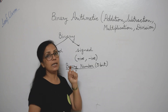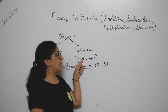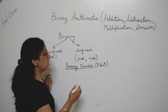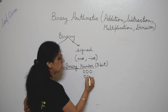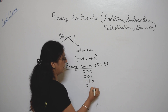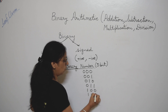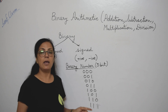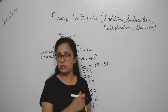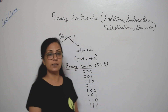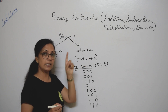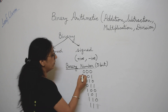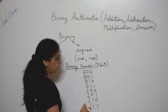Now we move on to signed representation of binary numbers. Signed binary numbers have both positive and negative values. If we take a 3-bit signed representation example, we will have the same combinations: 000, 001, 010, 011, 100, 101, 110, and 111 — again 8 combinations. The difference is that in signed representation, one bit is reserved for the sign. The leftmost bit — the MSB, or most significant bit — is reserved for the sign, representing whether the number is positive or negative.